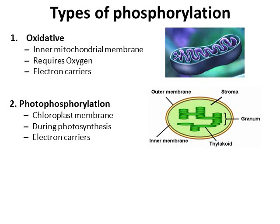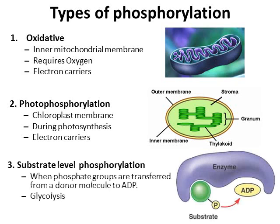The last type is substrate-level phosphorylation, which you'll also learn about more in respiration. The idea is fairly straightforward: the phosphate comes directly off the substrate. In the picture with the enzyme and substrate, you can see the phosphate coming directly out and being provided to the ADP. When studying respiration, it's useful to notice where the phosphates are — whether they're being used to phosphorylate something or just used in transition.